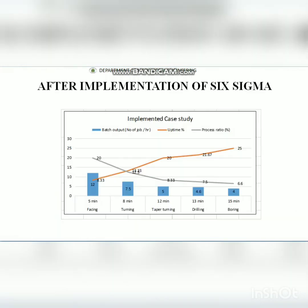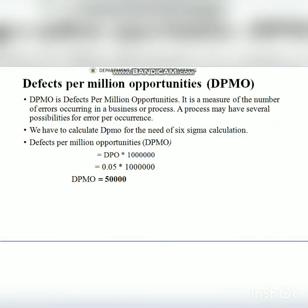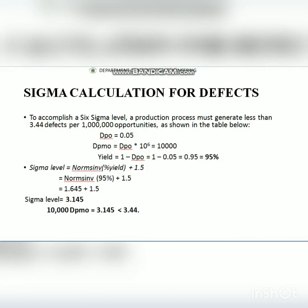After re-implementation, we find that the batch output has increased for each operation — uptime has increased while the defect process ratio has decreased. We again implement those values as DPO and DPMO. The final result in this project is 3.145, which is less than 3.44, meaning we have achieved the Six Sigma level target.